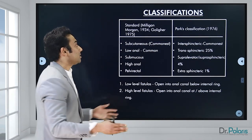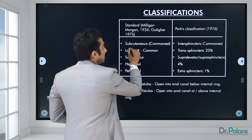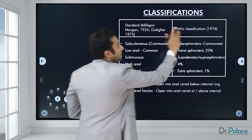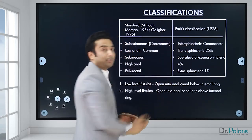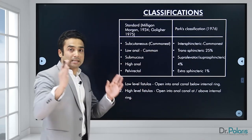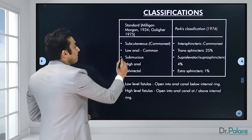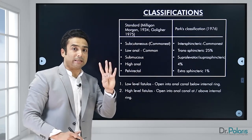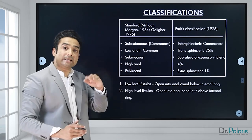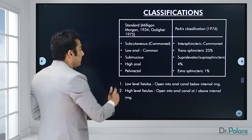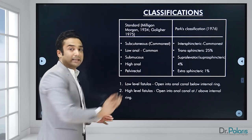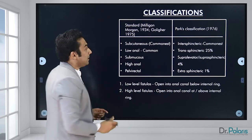Fistulas are classified using Milligan-Morgan's classification into: subcutaneous (just below the skin), low anal (in the lower 2 cm of the anal canal), high anal (in the upper part of the anal canal, just above the dentate line and below the anorectal ring), and pelvirectal (high, above the anorectal ring). Then comes Park's classification into intersphincteric, transsphincteric, suprasphincteric, and extrasphincteric. There is also classification into low level and high level fistulas, which is important when deciding the type of surgery.